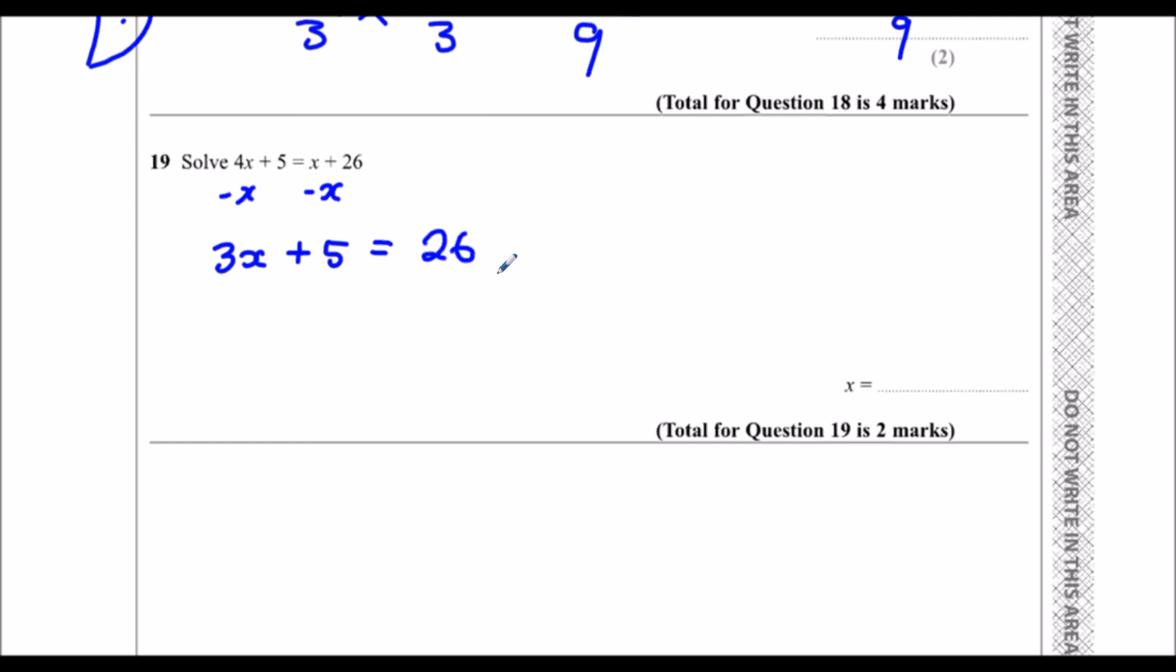Now I've got 3x plus 5 equals 26, so I'm going to take 5 from both sides of the equation to get rid of the 5 from here. So I've just got 3x left on this side, and it equals 26 minus 5, which is 21.